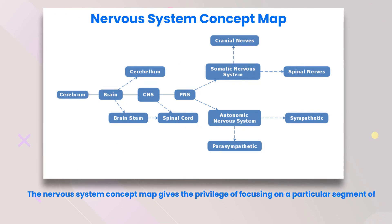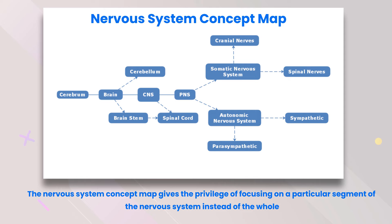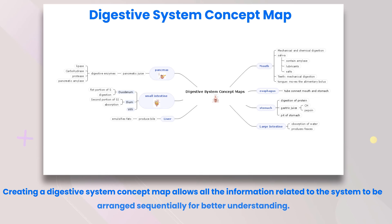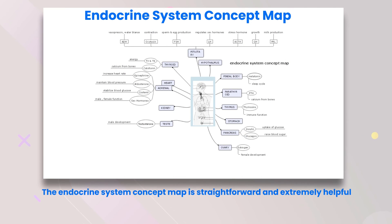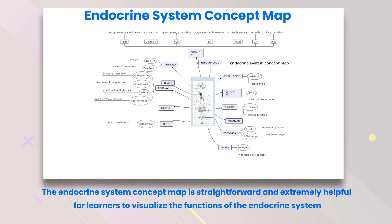Nervous system concept map: the nervous system concept map gives the privilege of focusing on a particular segment of the nervous system instead of the whole. Digestive system concept map: creating a digestive system concept map allows all the information related to the system to be arranged sequentially for better understanding. Endocrine system concept map: the endocrine system concept map is straightforward and extremely helpful for learners to visualize the functions of the endocrine system.